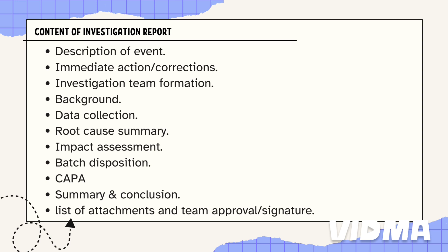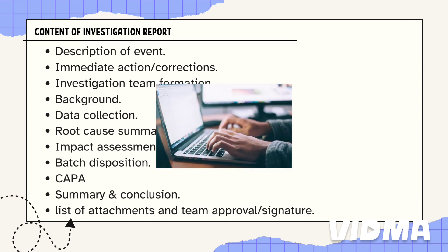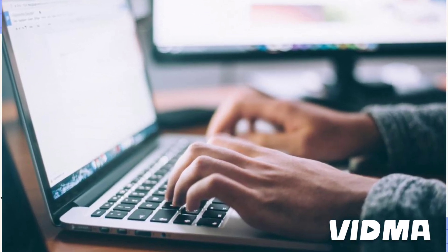The minimum points are: description of event, immediate corrections, team formation, background data collection, root cause assessment, impact assessment, batch disposition, corrective and preventive actions, summary and conclusion, list of attachments, and team approval and signatures. Including these points ensures you cover all aspects of the investigation.